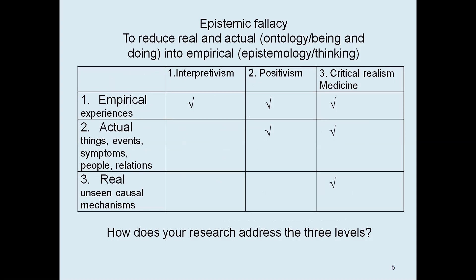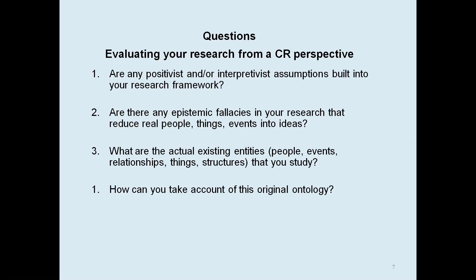The empirical level looks at the interpretive; the actual level looks at both the empirical and the actual; and the critical realist level looks at all three and brings them together. I ask students to think about how their research addresses these three levels — to divide their page into three parts and start writing the different parts of their research and which levels they are working at, along with questions to think about and discuss on the three levels of so-called natural necessity.